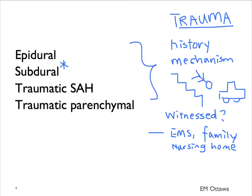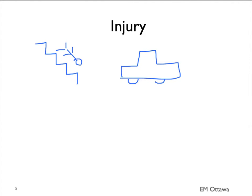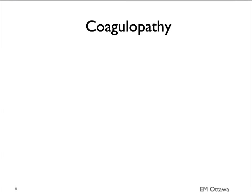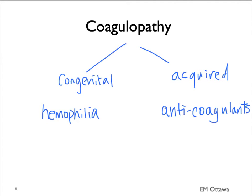Remember that for subdural bleed, the trauma might have been remote. Therefore, any change in personality or increased falls will increase our suspicion. We need to find out the mechanism of injury from collateral sources, and in particular, the level of consciousness since the time of injury, especially if there has been a change. As with all bleeding, we need to find out if the patient has a coagulopathy — either congenital, such as hemophilia, or acquired from medications such as anticoagulants. Either of these would change our management.